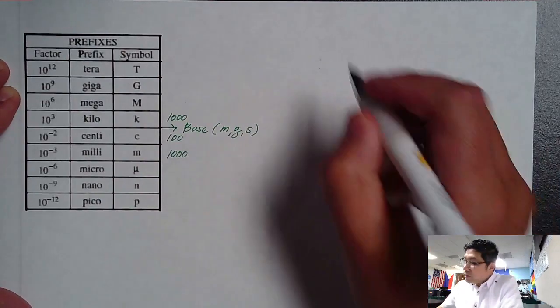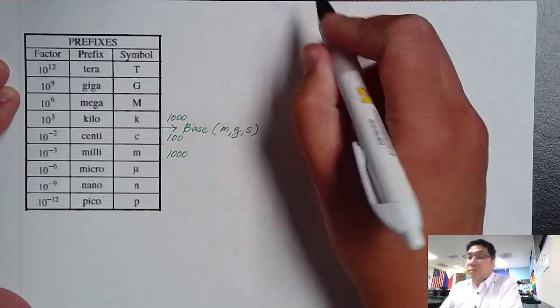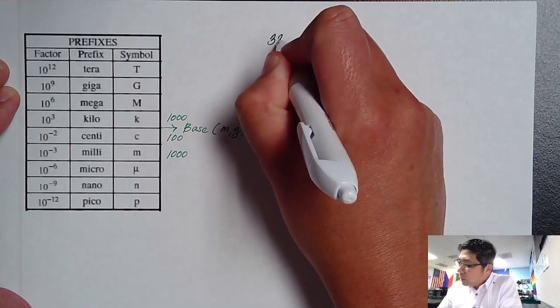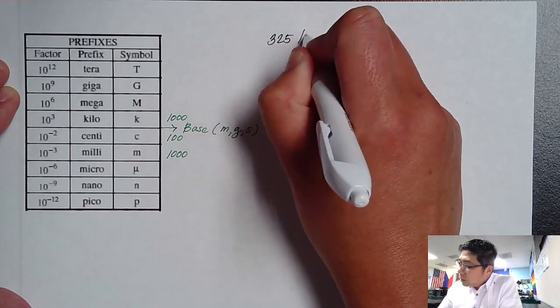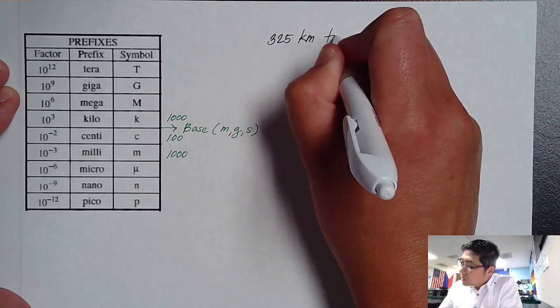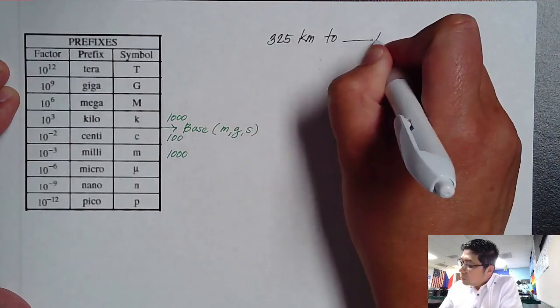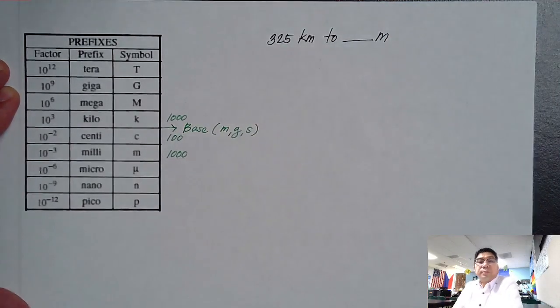Let's use 325 kilometers and convert this into meters.